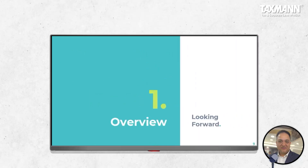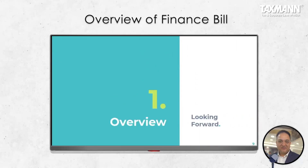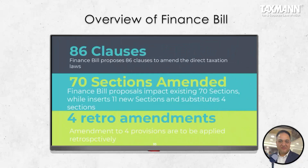Let's start with the income tax and have an overview of the Finance Bill. There are around 160 clauses in this Finance Bill and seven schedules. Regarding changes relating to income tax or direct taxes, there are 86 clauses which have an impact on direct taxation. Out of these 86 clauses, 79 are relating to income tax and the remaining six relate to either Vivad Se Vishwas Act, Equalization Levy, or IDS scheme.